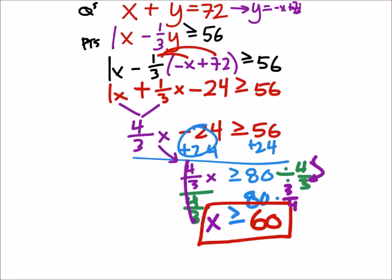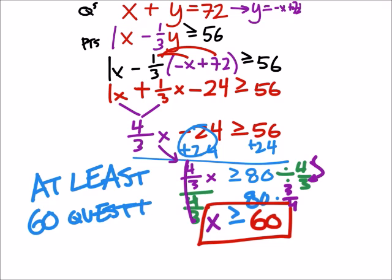This tells us that she has to get at least 60 questions correct. Which means the most she can get incorrect for a score of 56 would be 12. But I'm okay with just writing that.